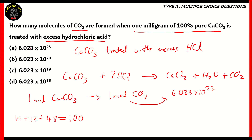If we look at the options, all of them have the same base; however, the exponents differ, and the correct exponent is 18. So option D is the correct option. Option A is 1 mole — that's for 100 grams. Option B has 10²⁰ — that's for 100 milligrams. 10¹⁹ is for 10 milligrams. So option D is correct because 6.023 × 10¹⁸ molecules of CO₂ are formed when you have 1 milligram of calcium carbonate, according to the equation CaCO₃ + 2HCl → CaCl₂ + H₂O + CO₂.